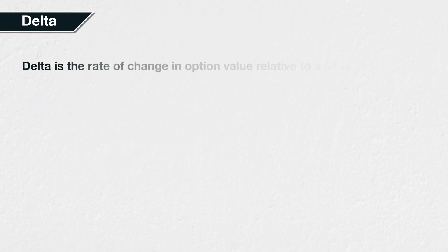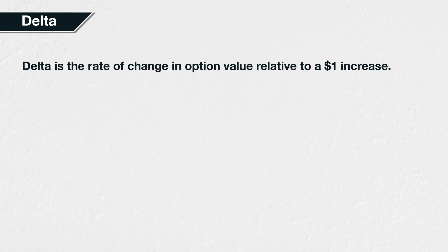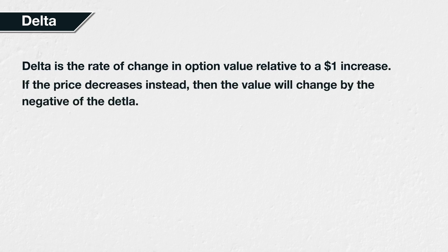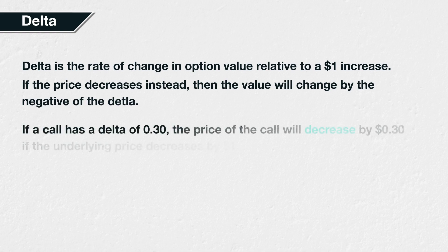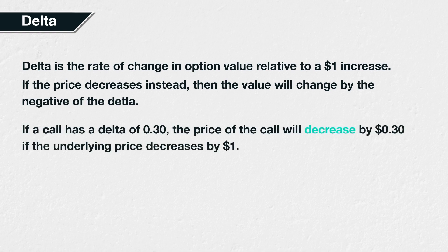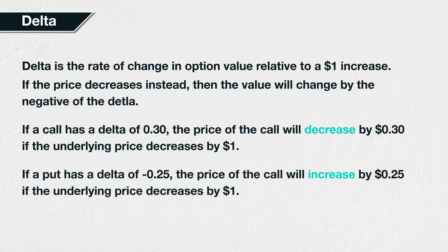Delta is always quoted as the rate of change in option value relative to an increase of $1 in the underlying asset price. However, as you may have inferred, if instead of increasing, the underlying asset price decreases by $1, then options will change value according to the negative of their delta. For example, if a call option has a delta of 0.3, this means the price of the call will decrease by $0.25 if the underlying asset price decreases by $1. Or if a put option has a delta of minus 0.25, this means the price of the put will increase by $0.25 if the underlying asset price decreases by $1.